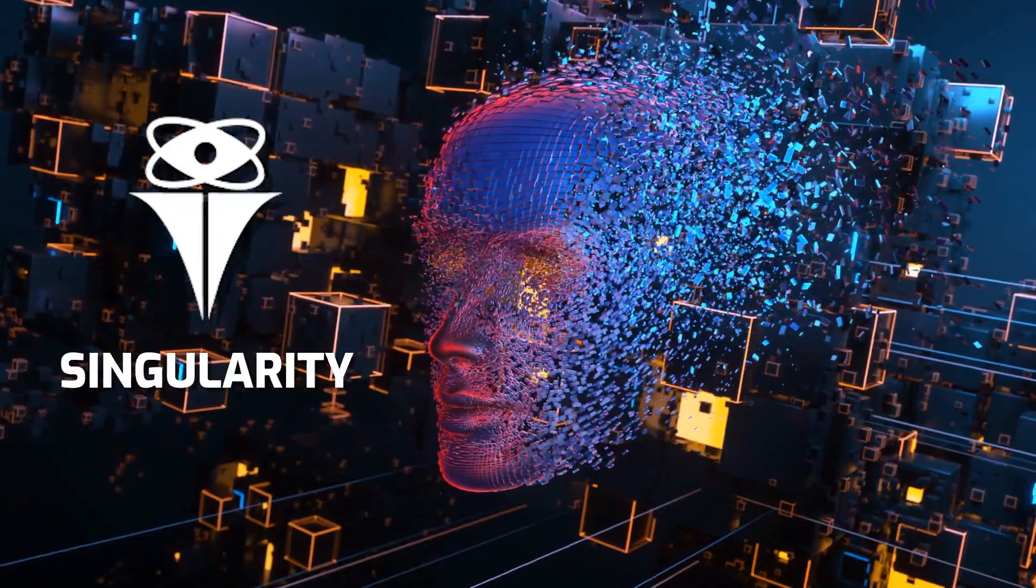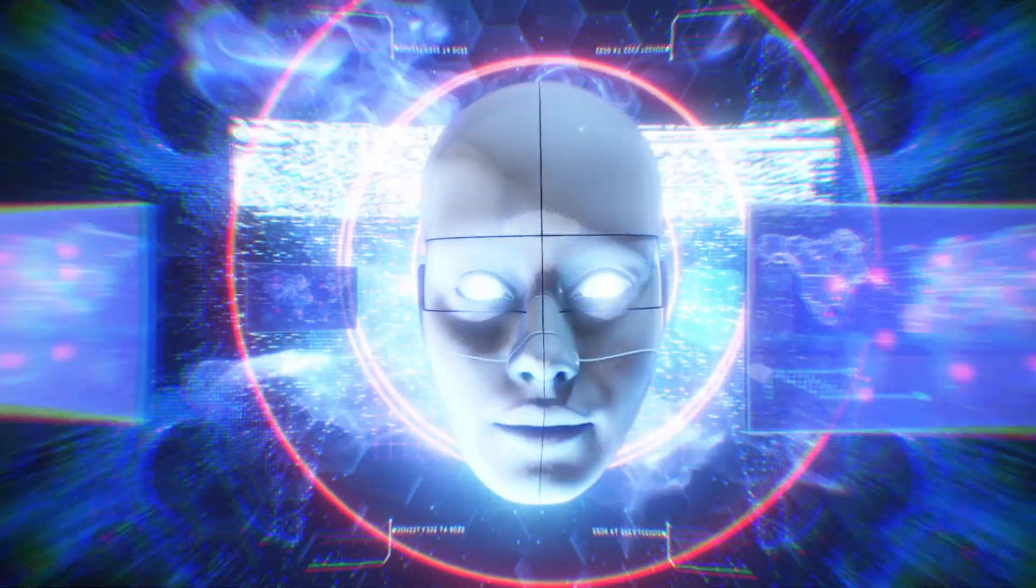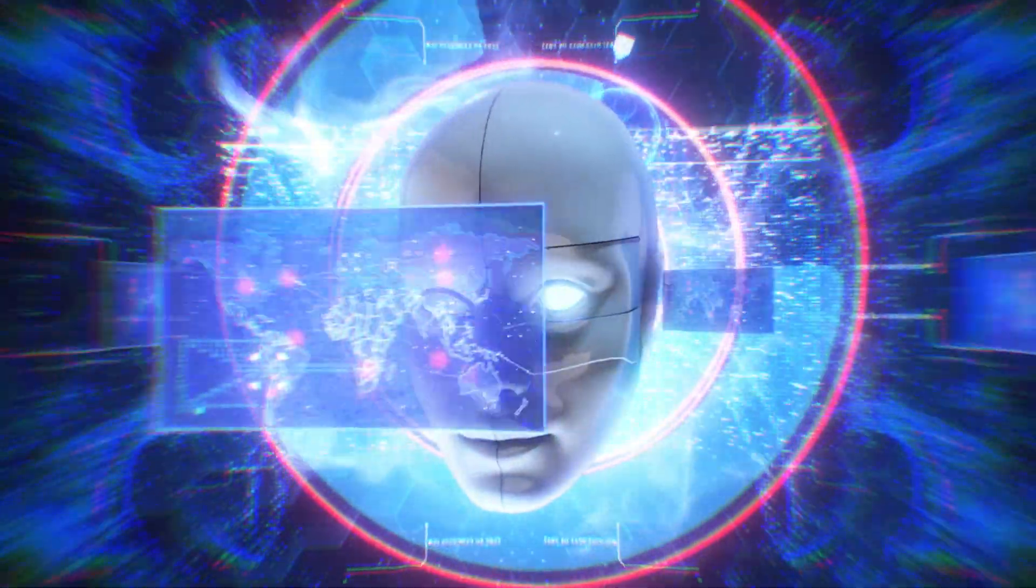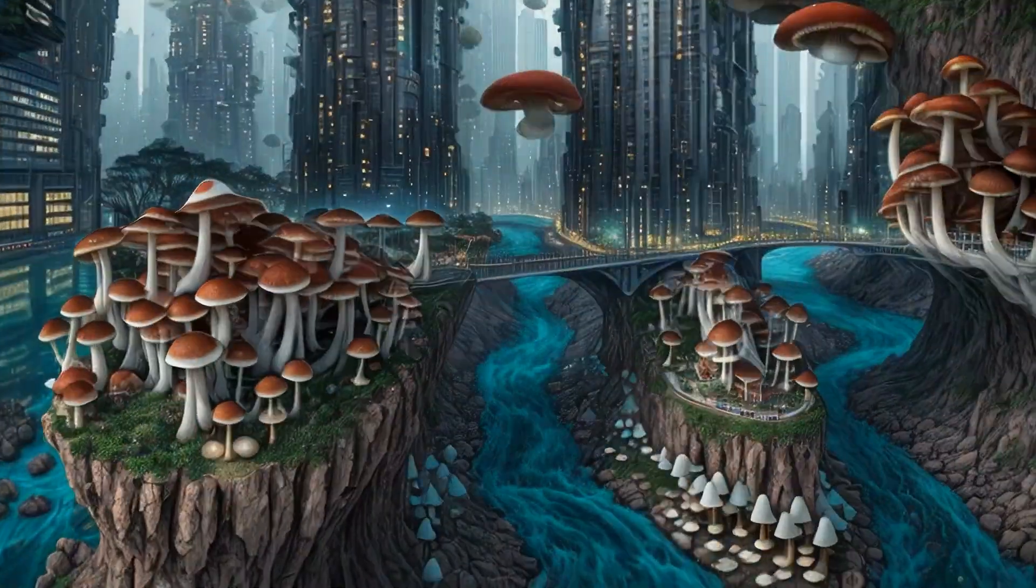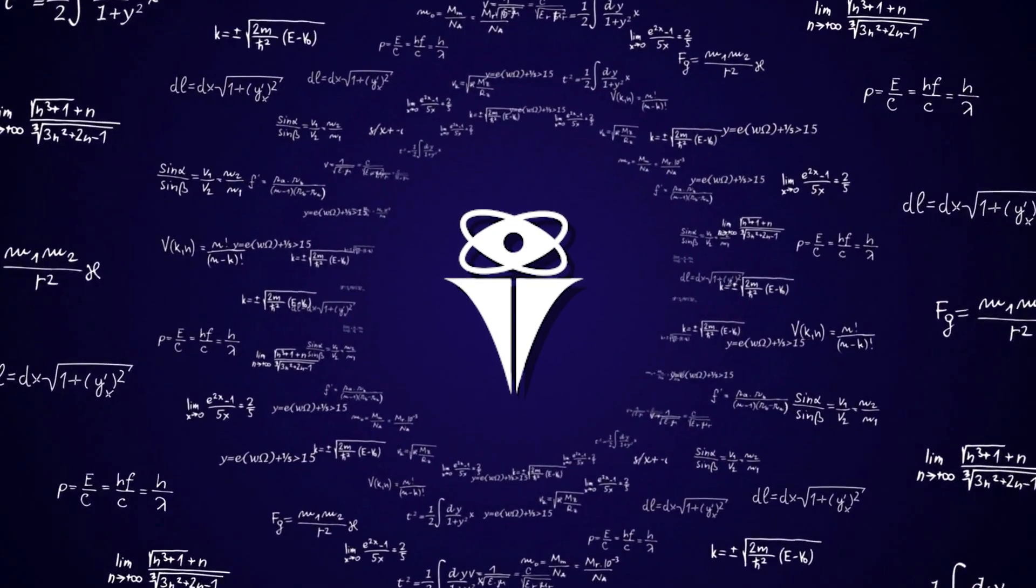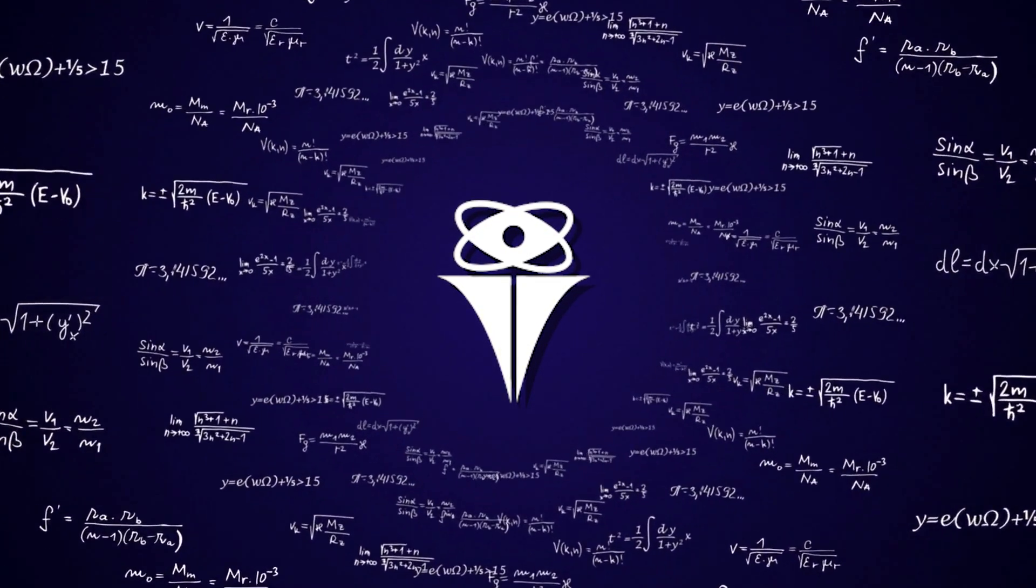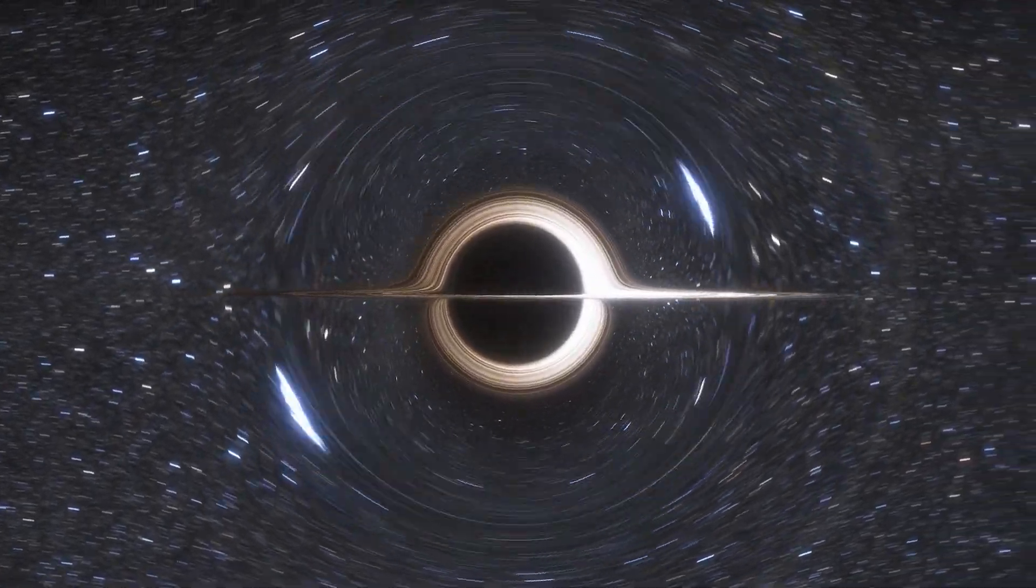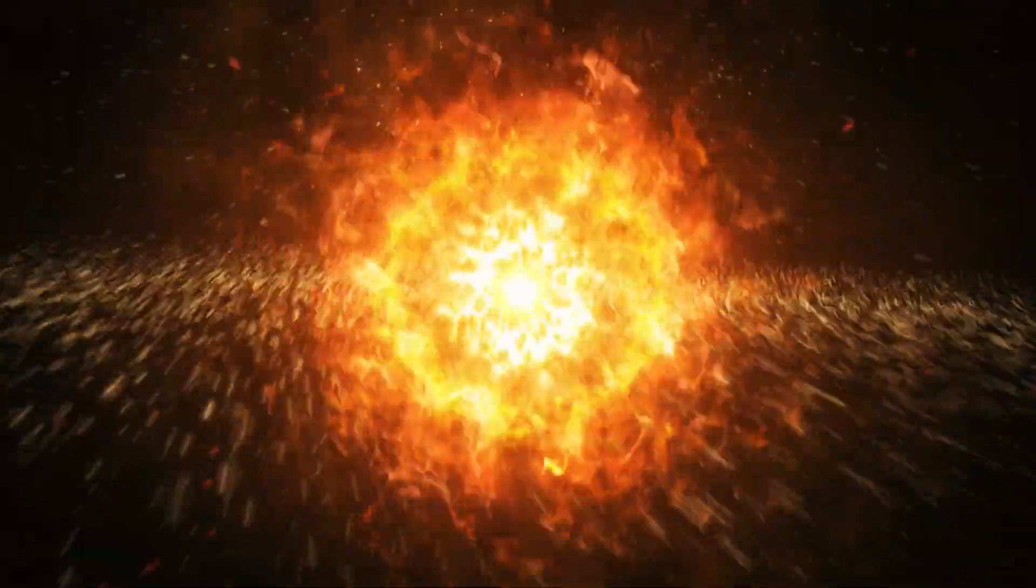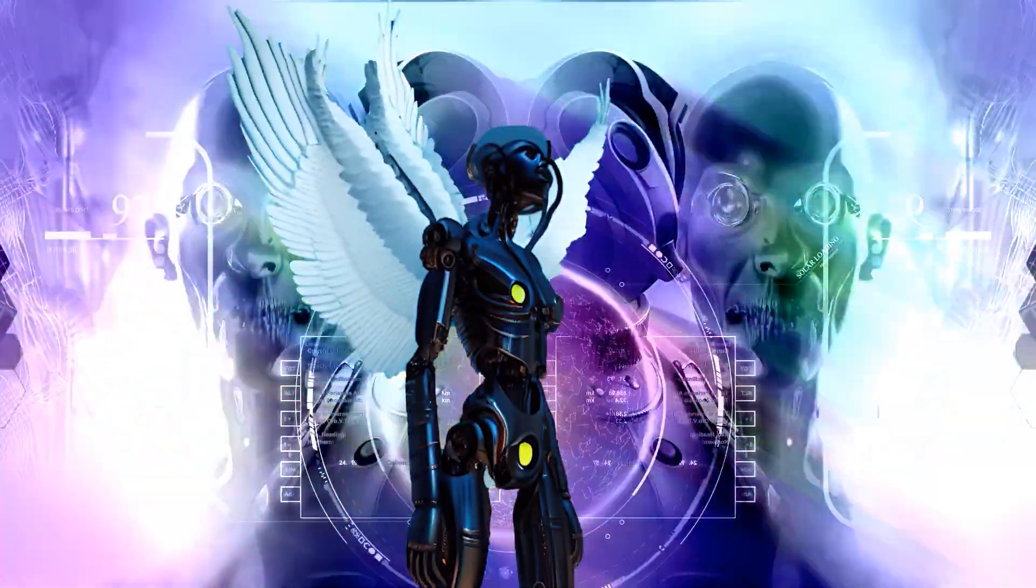Singularity. The technological singularity is a concept where AI advances to a point where it's capable of improving itself so rapidly that the world changes in ways we can't fully comprehend. It's similar to how a singularity in physics is a point where our equations no longer make sense and give infinite values. Just like we can't accurately measure the mass of a black hole or the temperature of the Big Bang, we can't predict what happens beyond this technological tipping point.